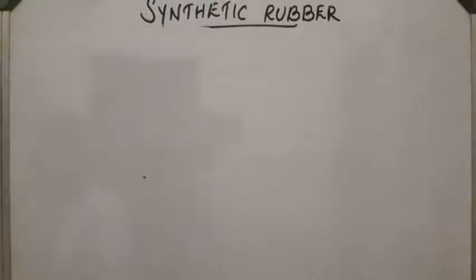Next compound is Buna-S, second example. We already discussed earlier. It is a copolymer obtained from butadiene and S means styrene.